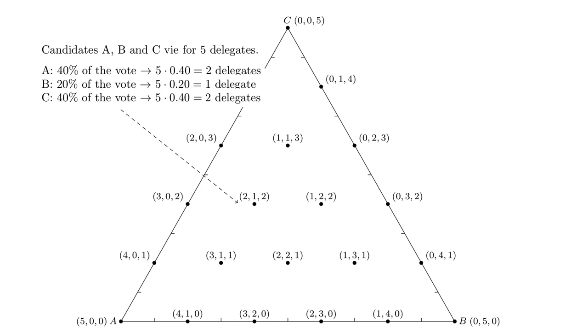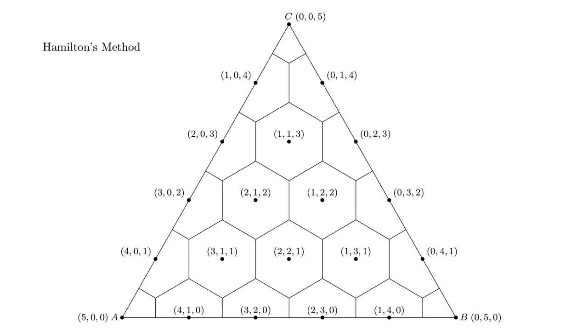Rounding is more complicated when there are three candidates and there are different ways to do it. The Democrats use a method named after Alexander Hamilton who, when he wasn't singing and dancing, was thinking about the same problem in 1790 as he was calculating how many members of Congress each state should get. In this method, if an election outcome falls on a point anywhere in the hexagon, the quotas are rounded to the numbers at the center of the hexagon.